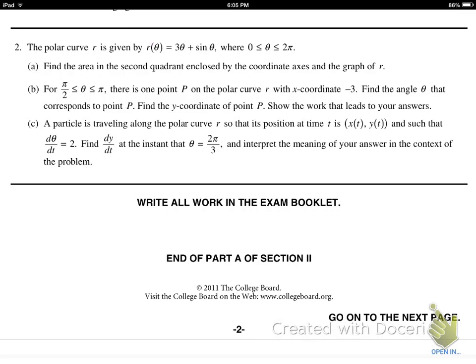We have a polar curve R given by r(θ) = 3θ + sin(θ) where 0 ≤ θ ≤ 2π. In part A, we want to find the area in the second quadrant enclosed by the coordinate axes and the graph of R. A key part to this is the fact that this is enclosed by the coordinate axes.